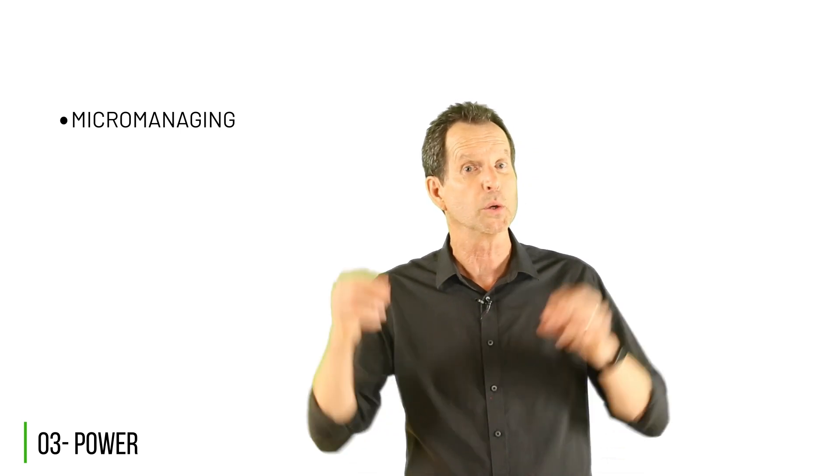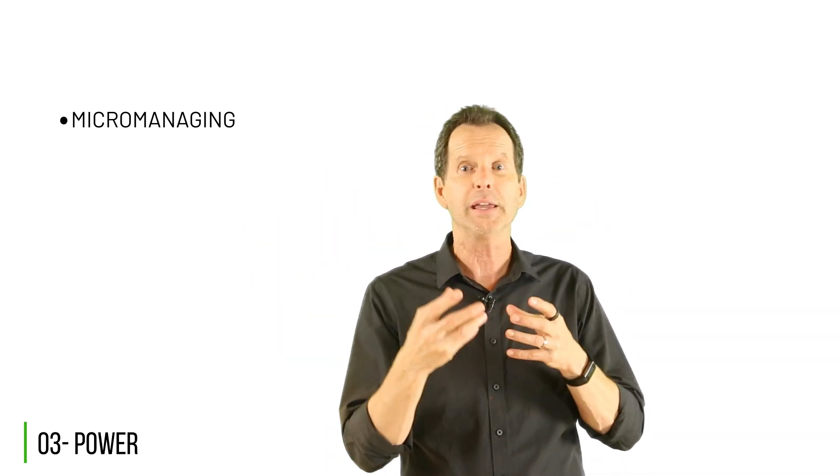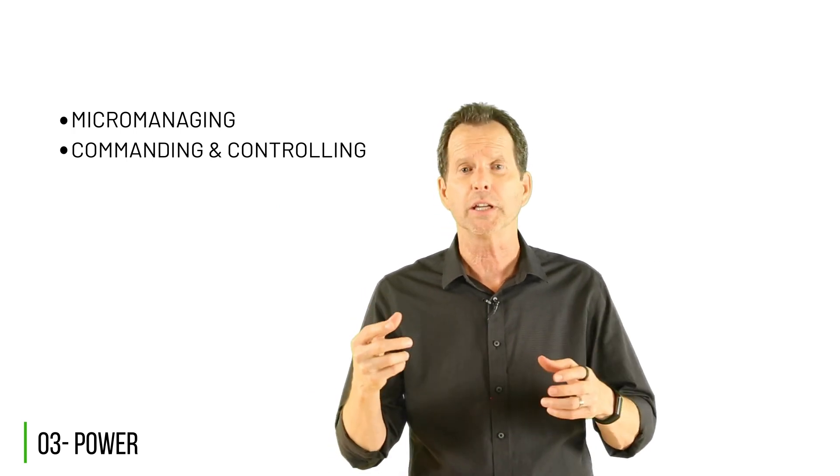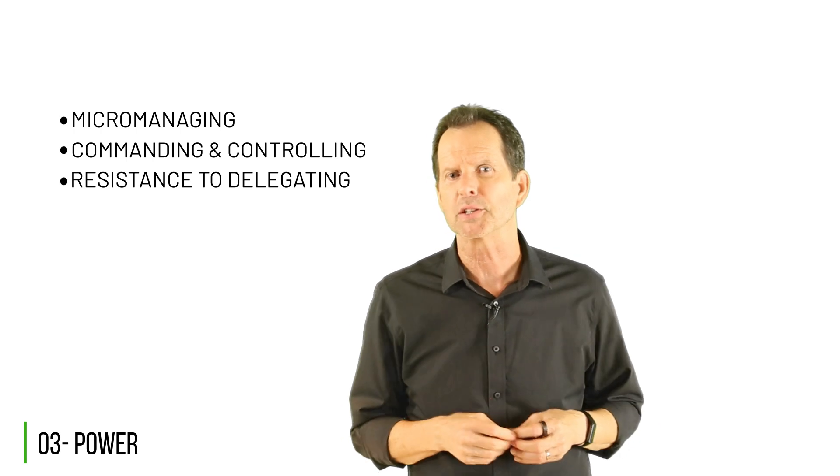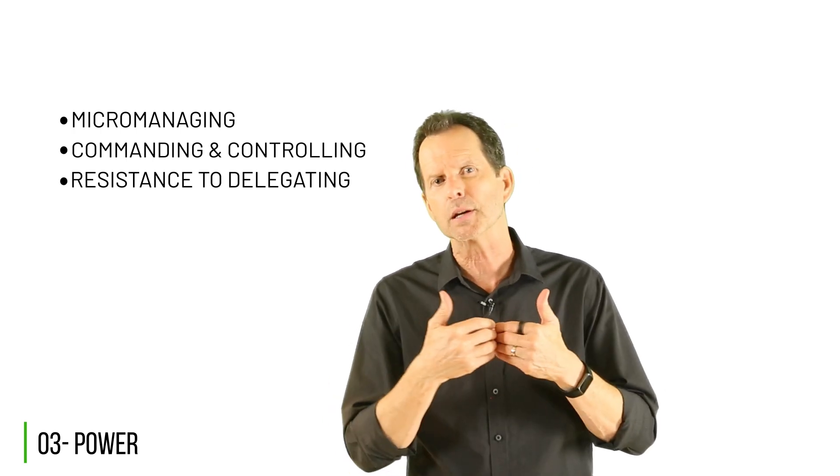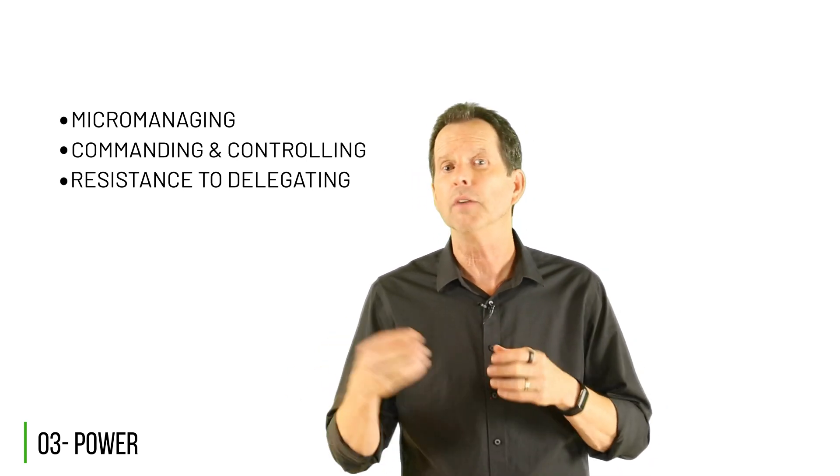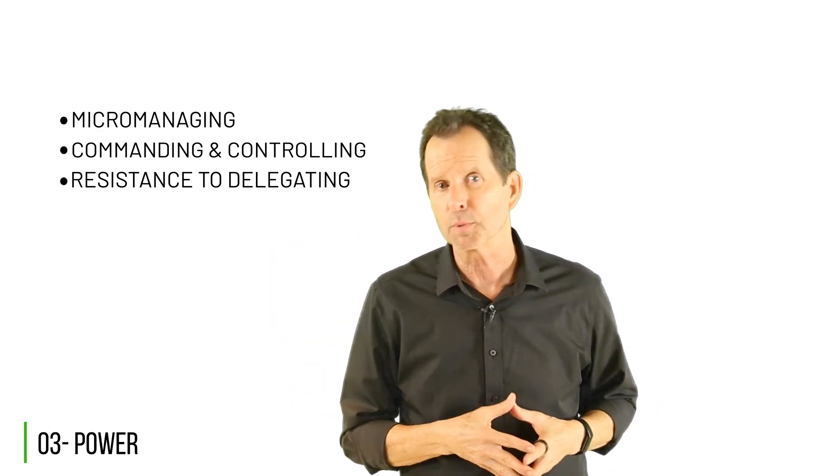Examples of over-control can include micromanaging, for example, which typically stems from the insecurities of those in charge and or their lack of being trustful. Check out more about being trustful in Principle Number One. Another example is commanding and controlling, including rigid rules and expectations, sometimes even using mental and or physical intimidation to remain in charge. This is essentially the bully syndrome. Resistance to delegating can also be considered a mechanism of over-control. This can stem from feeling that no one can do it as well as me, or not being trustful of others' reliability, capabilities, or expertise.